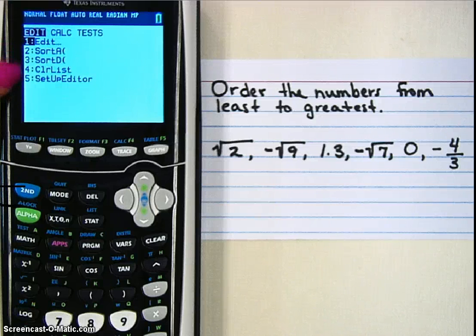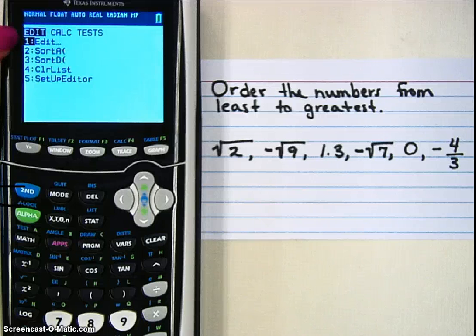Edit, sort A, sort D, clear list, set up editor. Any time you want to put numbers in, you want to go to edit, so I'm going to hit enter.